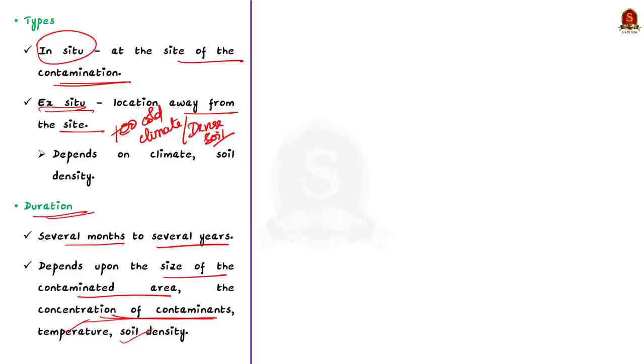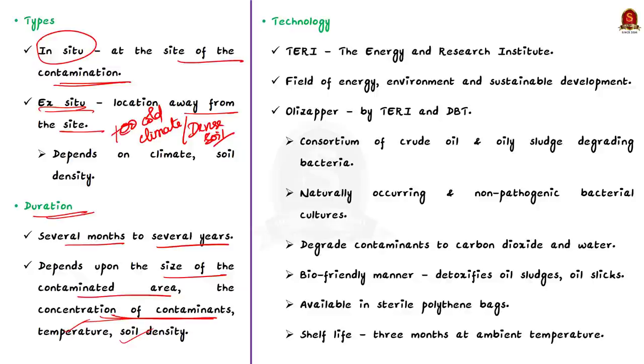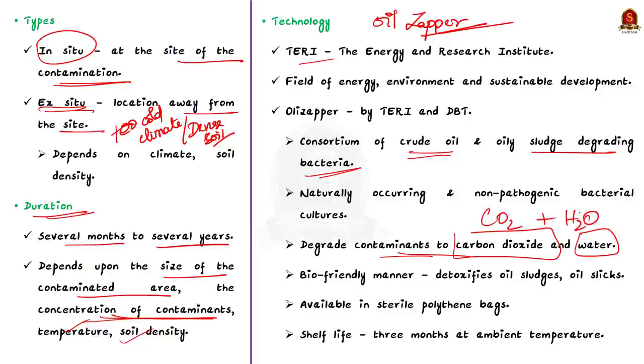Now, before concluding this discussion, let us see an example of an indigenously developed mechanism. The product that I am talking about here is the oil zapper. Oil zapper is developed by TERI and partly by Department of Biotechnology which is under Ministry of Science and Technology. Oil zapper is a consortium of crude oil and oil sludge degrading bacteria derived from various naturally occurring and non-pathogenic bacterial cultures. These biological organisms eat up the contaminants which are mostly organic compounds and convert them into carbon dioxide and water. It cleans up the surrounding area without harmful residues or side effects. Oil zapper's uniqueness lies in the bio-friendly manner in which it detoxifies oil sludges and clean ups oil slicks. Oil zapper is neatly packed into sterile polythene bags and sealed for safe transport. The shelf life of the product is three months at ambient temperature. This is all regarding oil zapper.